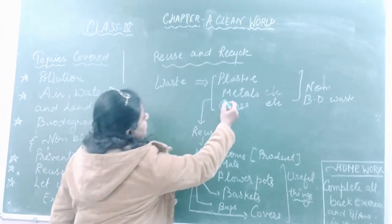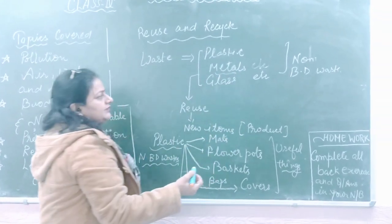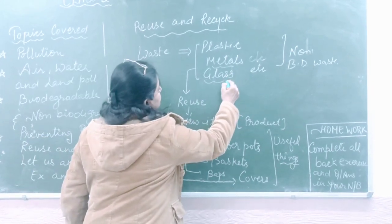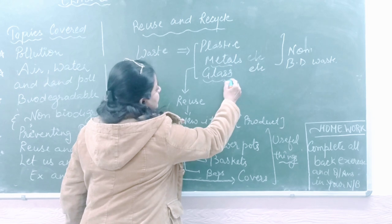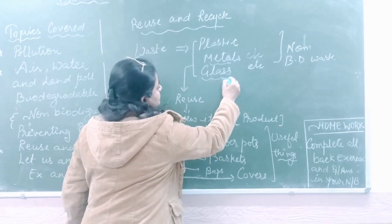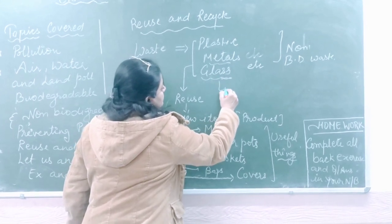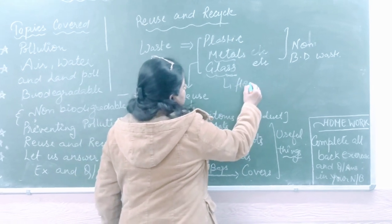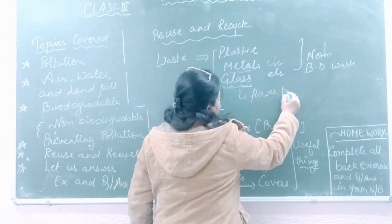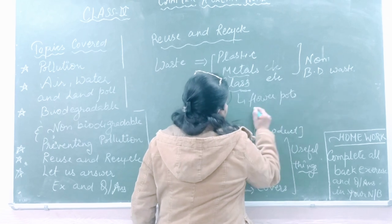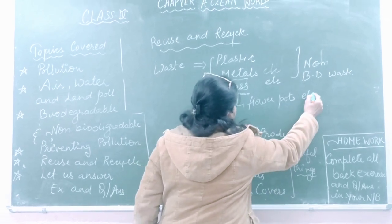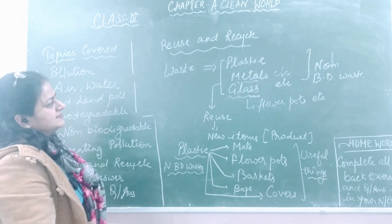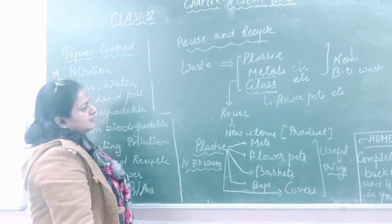And if we take metal, we can also reuse metal. And if we take glass, we can also reuse glass — by welding. We can make flower pots and so many different items with the help of glass and plastic and mats.